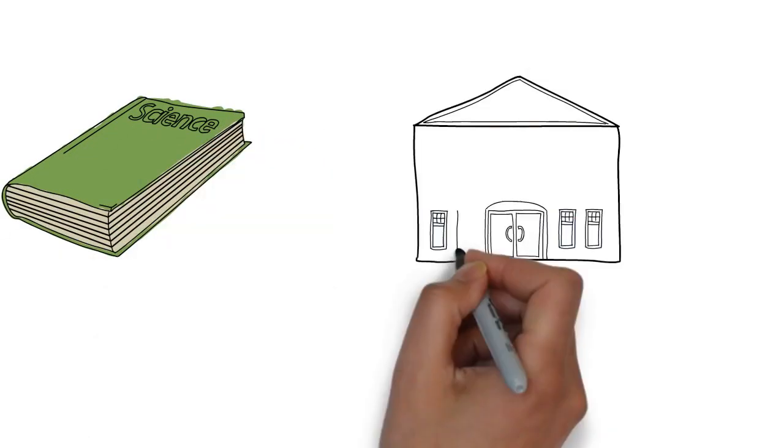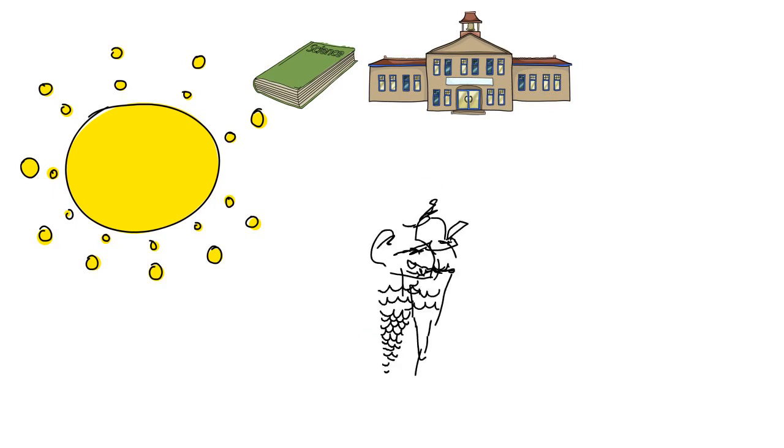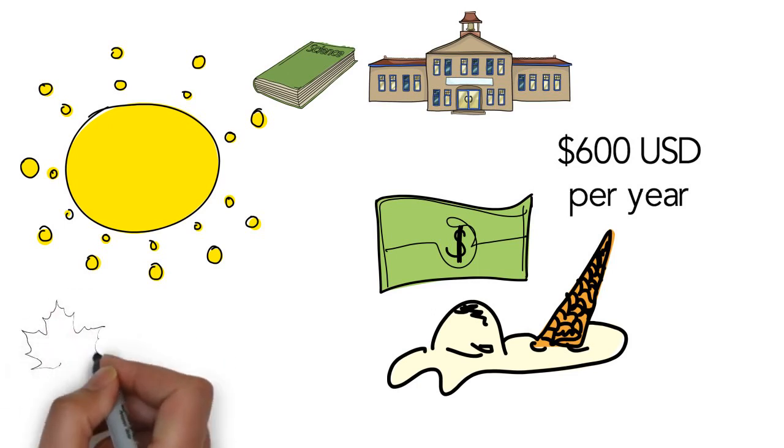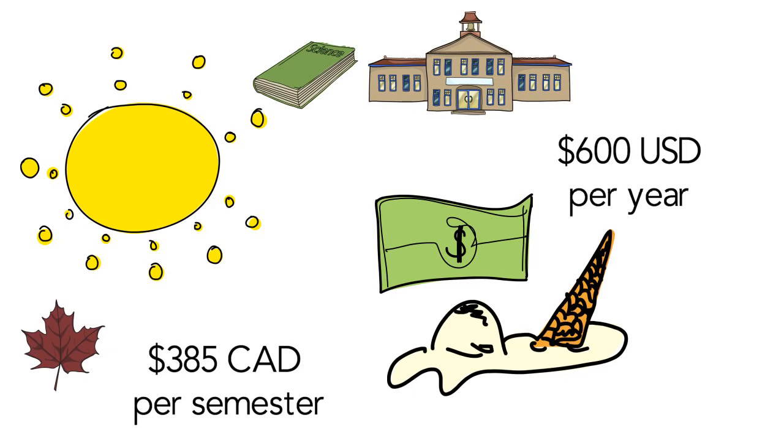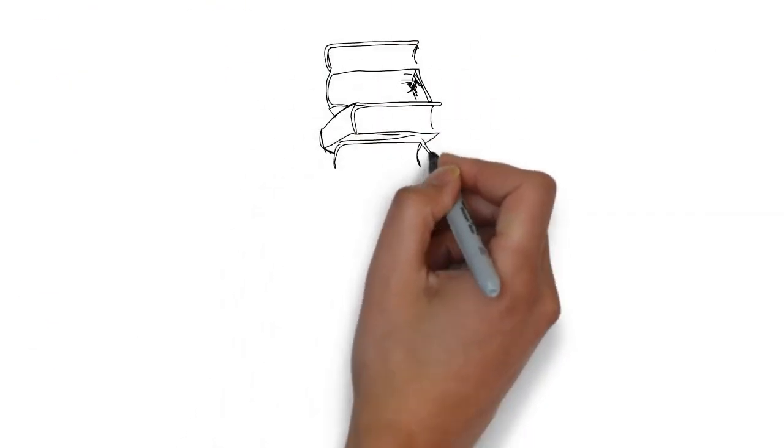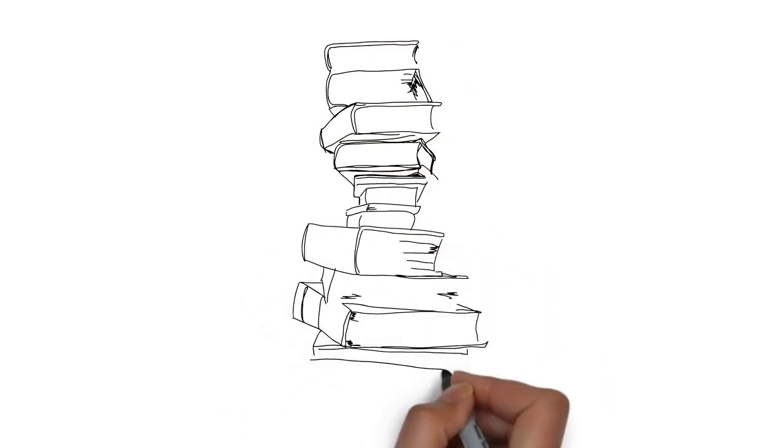The use of textbooks in university courses is as common as ice cream on a hot summer day. On average, students in the US spend about $600 per year on textbooks. Canadian students spend around $385 per semester. Commercial textbooks are expensive, and students report that these prices negatively impact their learning and time to graduation.